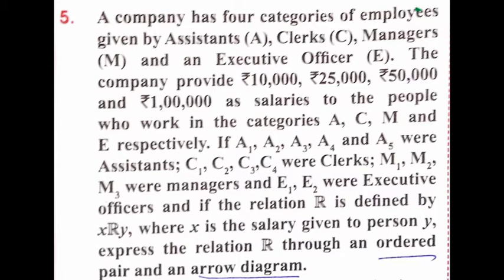The employees are: A1, A2, A3, A4, A5 are assistants; C1, C2, C3, C4 are clerks; M1, M2, M3 are managers; E1, E2 are executive officers. The relation R is defined by x relates to y, where x is the salary given to the person y.